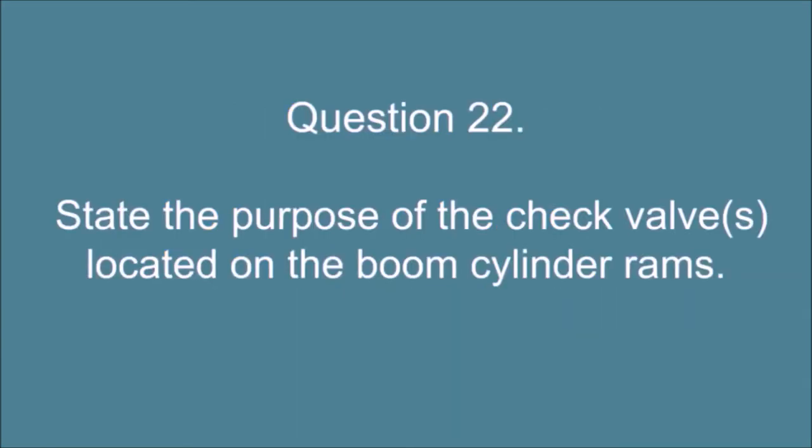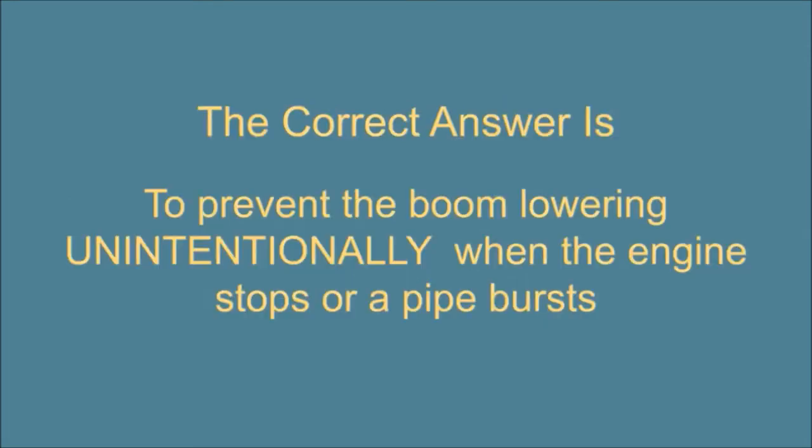Question 22. State the purpose of the check valve or valves located on the boom cylinder rams. The correct answer is: To prevent the boom lowering unintentionally when the engine stops or a pipe bursts.